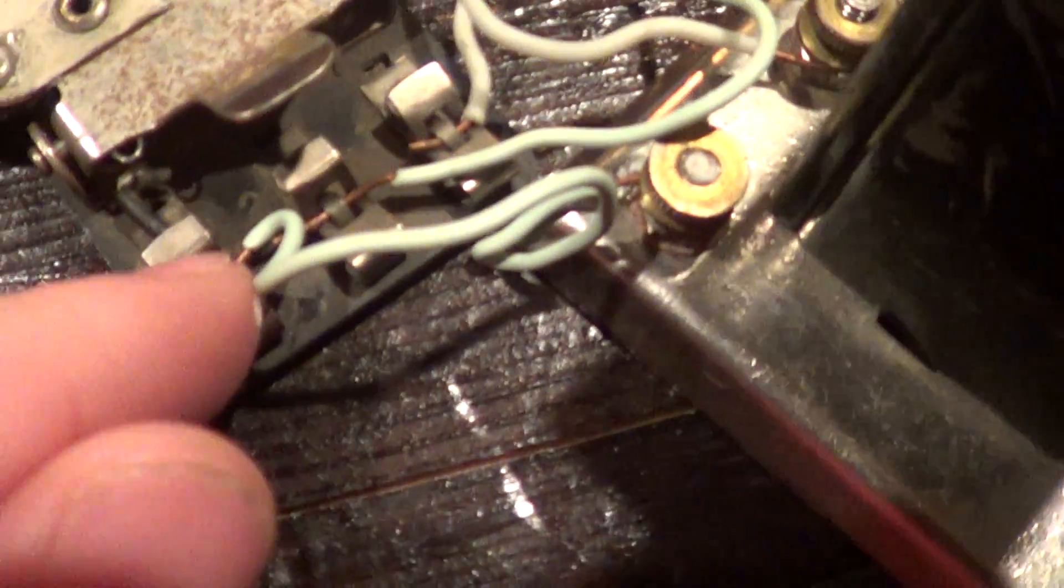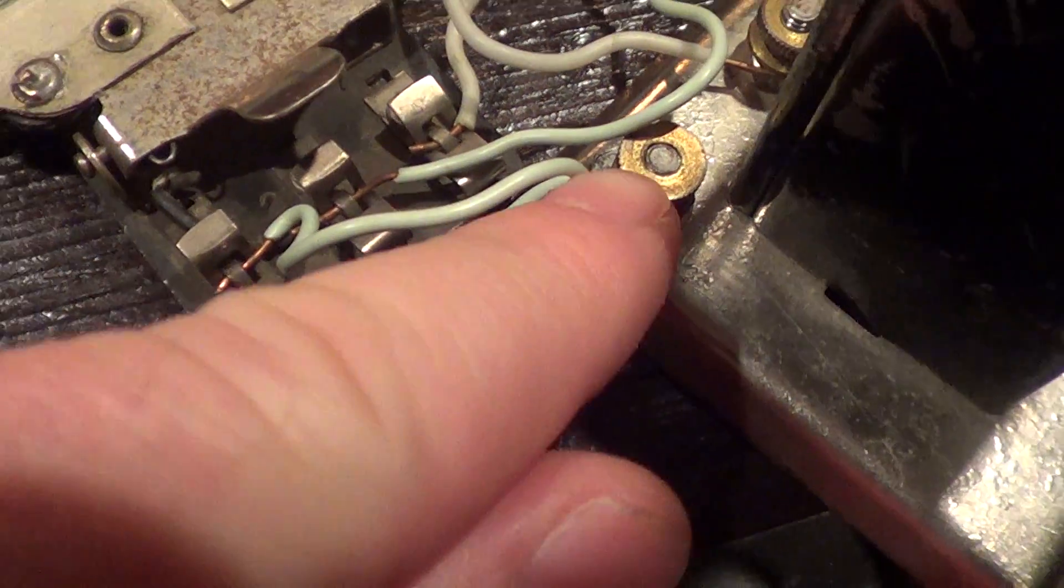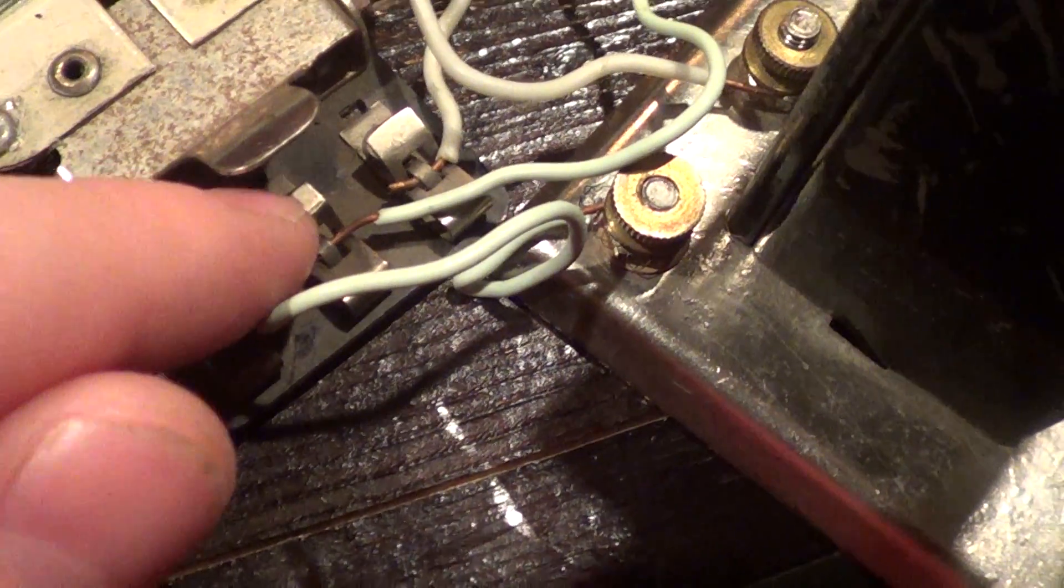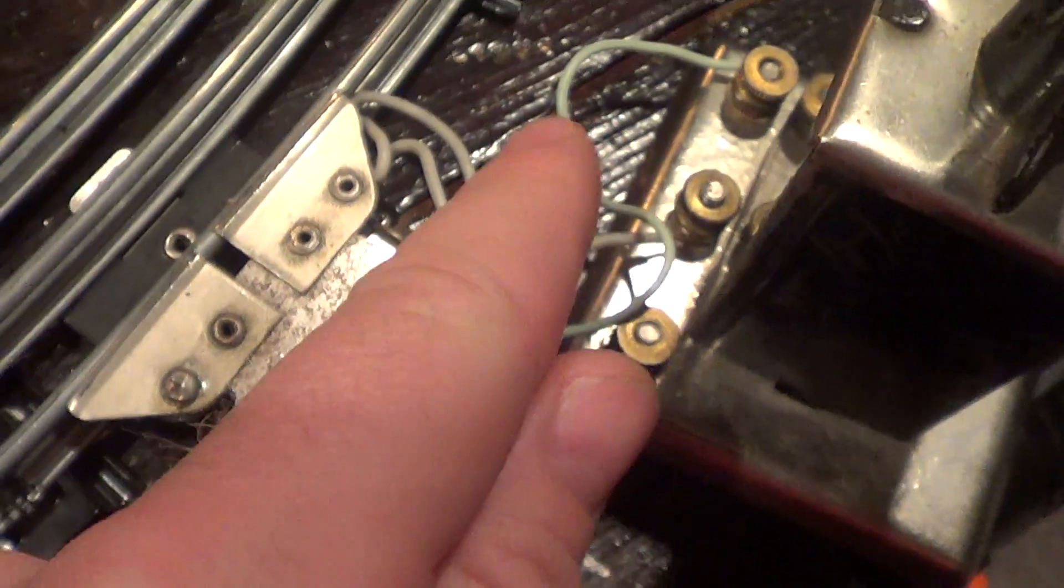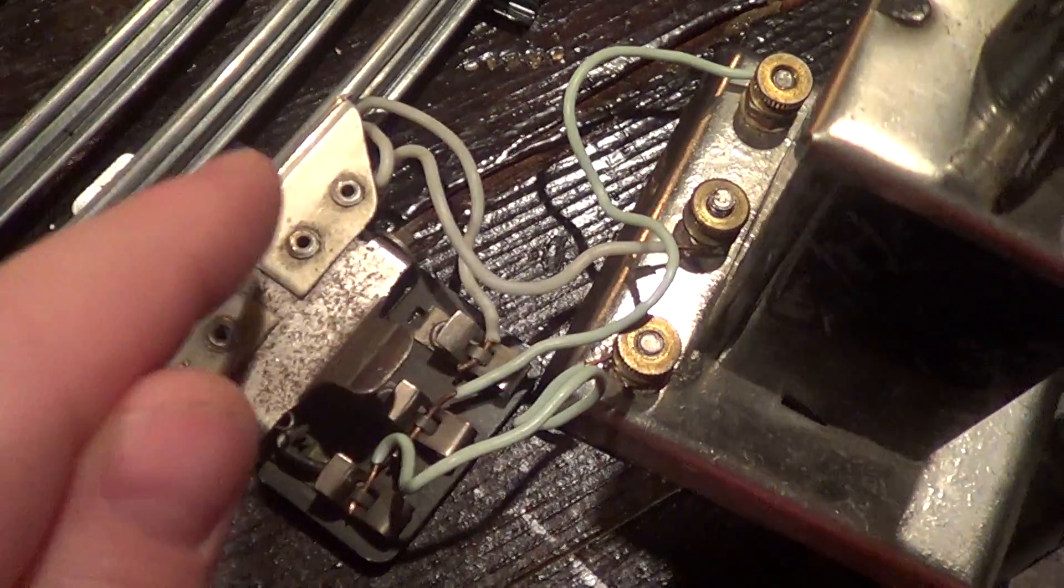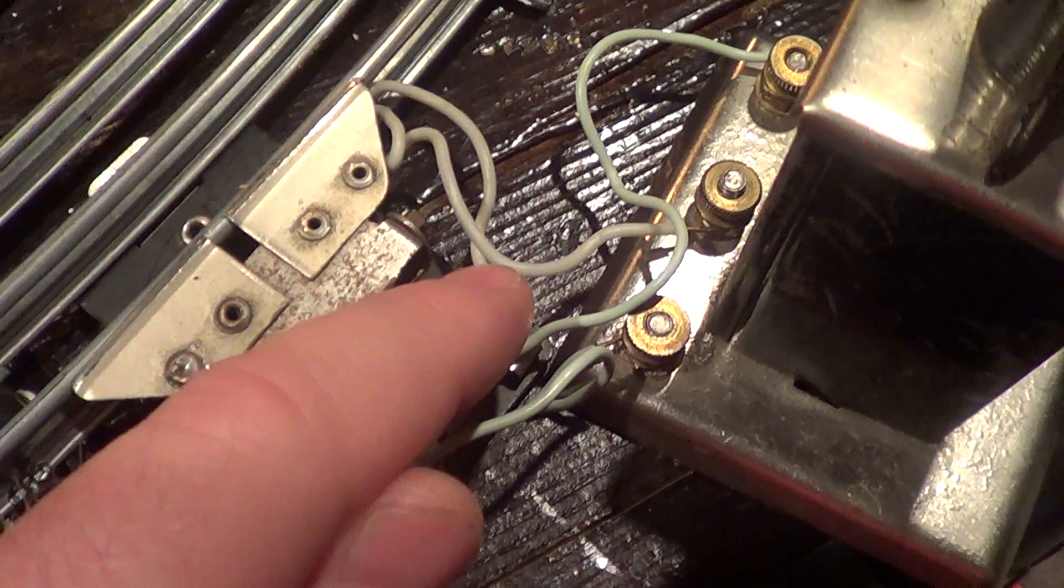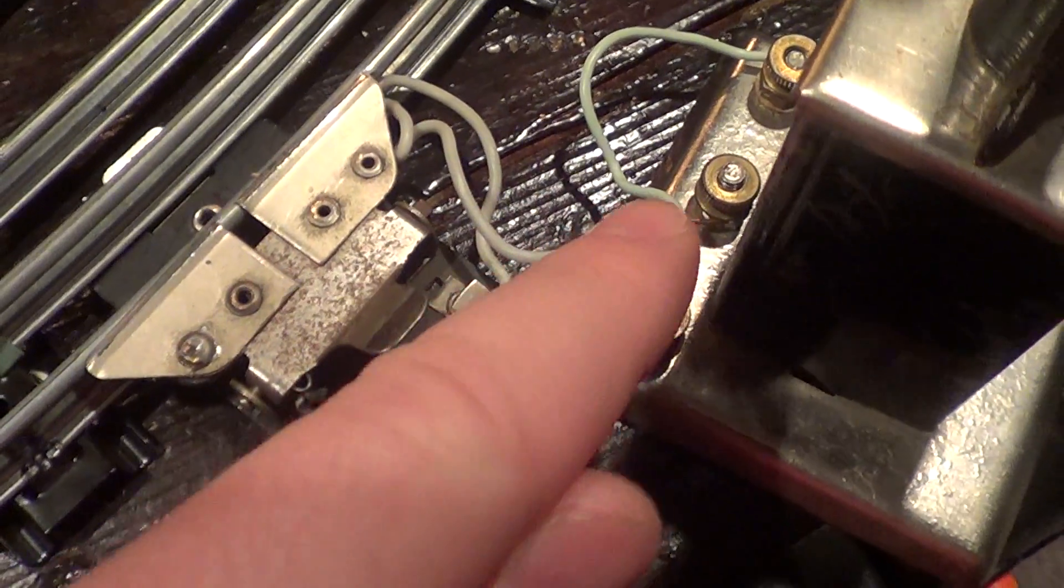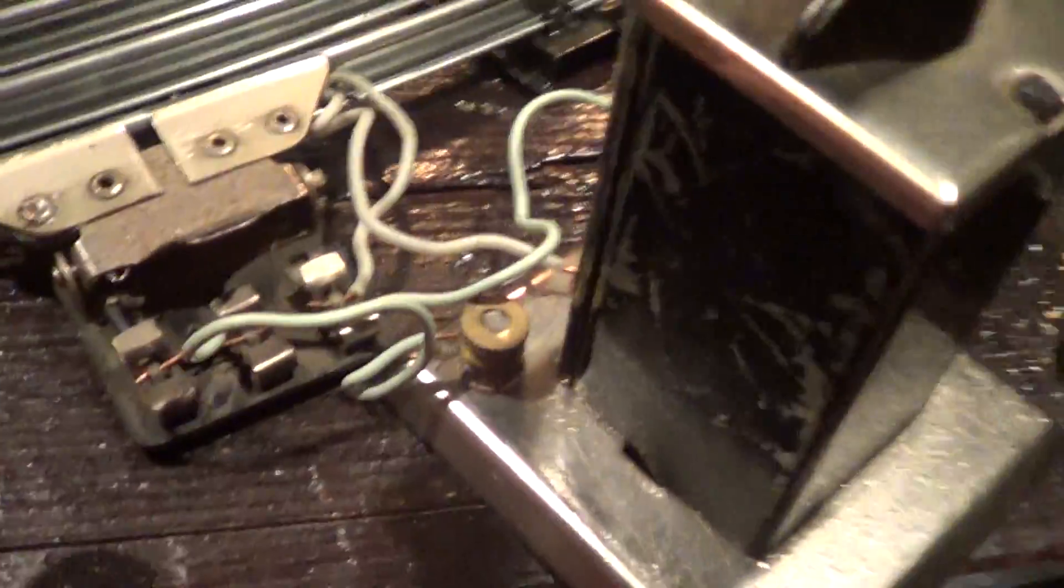How you do that is you have the far left one that goes to the far left one, and then the second one in the middle goes to the one all the way at the other end, and then you get the white one on this far right which goes to the middle.